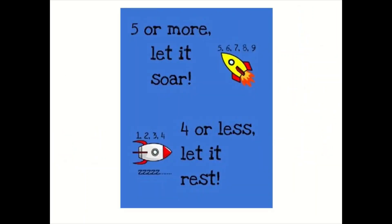To be able to round any numbers, you need to know this poem, or at least know the rule that this poem is talking about. Five or more, let it soar. Four or less, let it rest. Five or more means five, six, seven, eight, nine — let it soar. Four or less means four, three, two, or one — let it rest.